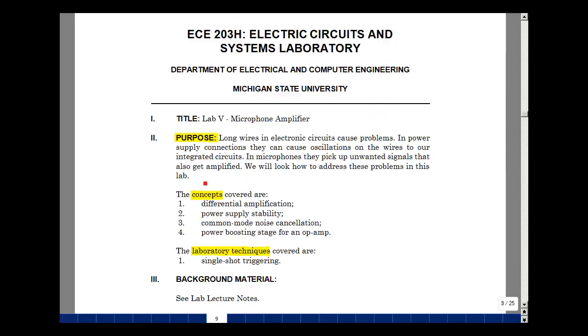The purpose of Lab 5 is to look at problems with long wires. With power supply connections, we can get oscillations, and with microphones, we can pick up unwanted signals. We looked at concepts of differential amplification, stability in power supplies, the ability to reject common noise signals, and putting a power booster on our op-amp. In our laboratory techniques, we're going to look at how to use one-shot triggering to pick up a voice signal. This is Lab 5, microphone amplifier.